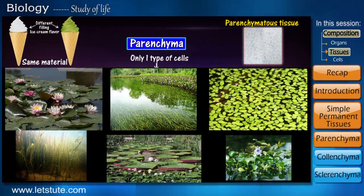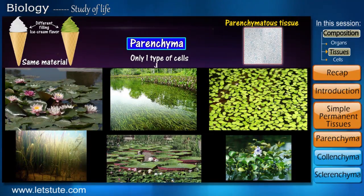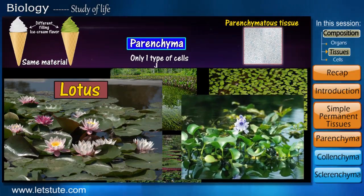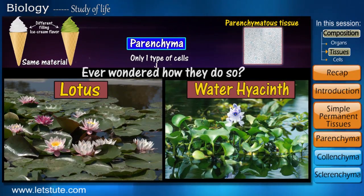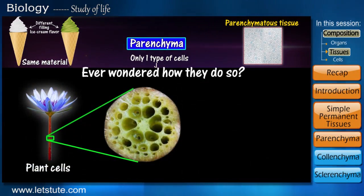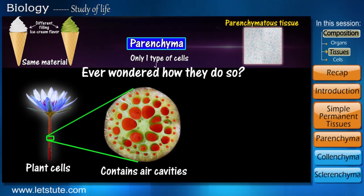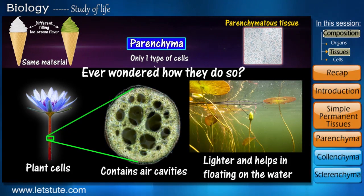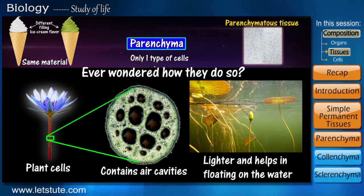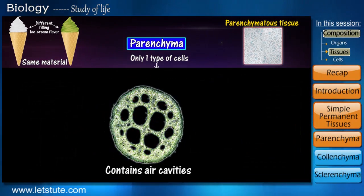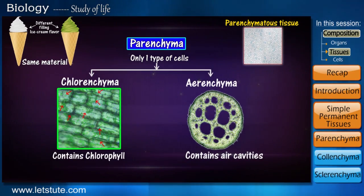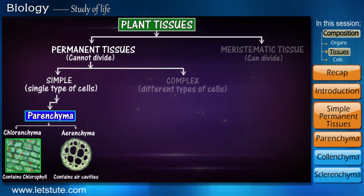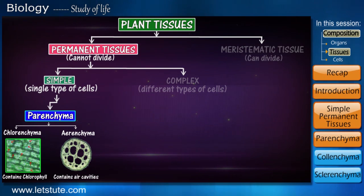There are also many plants which live in different types of water bodies. Some of these float on the water surface — for example, the lotus plant or the water hyacinth. The cells of such plants contain air cavities which trap air inside them, making the plant lighter and helping the leaves to float. Such parenchyma tissue whose cells contain air cavities is called aerenchyma. With that, we have completed the functions and first type of simple permanent tissue.